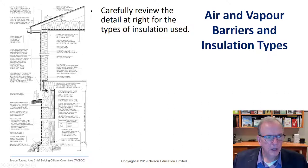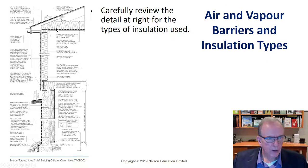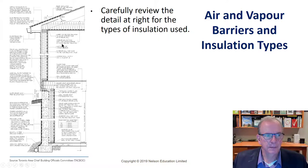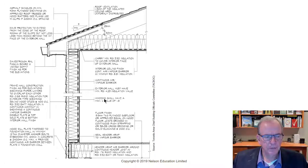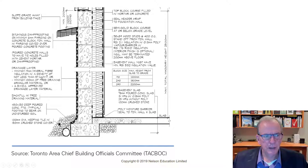There's a header wrap air barrier around continuous header joist with rigid insulation — RSI — and batt or foam insulation. The header wrap, which we looked at in the previous lecture, is acting as an air barrier around here and ties to the air vapor barrier. It has to be continuous when it's an air barrier. That's why it says continuous air and vapor barrier. We could have a vapor barrier on the outside, but we would have to seal it to the inside to make it continuous. These are very well-done details by the Toronto Chief Area Building Officials Committee — definitely worth a good look through.